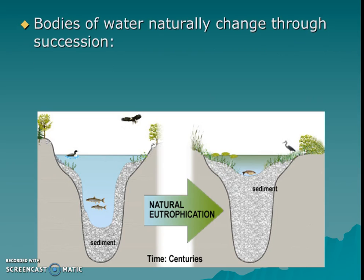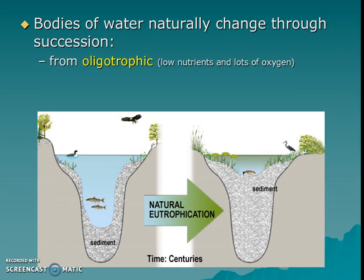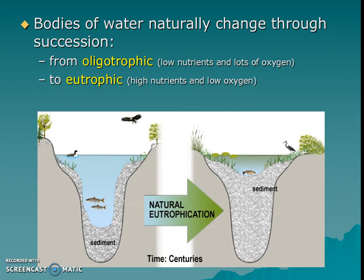Overall, the bodies of water will naturally change. The part at the beginning is called oligotrophic, meaning low nutrients and lots of oxygen. At the end, we call it eutrophic, where there are high nutrients and low oxygen.